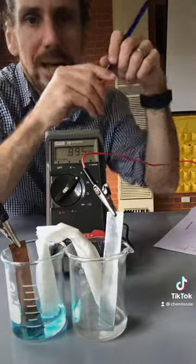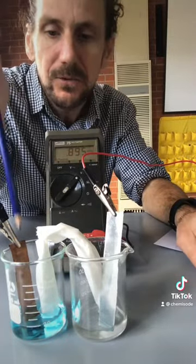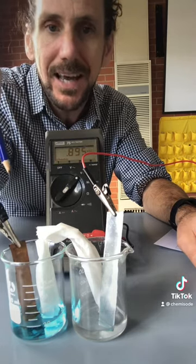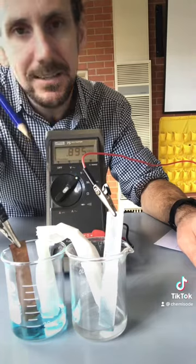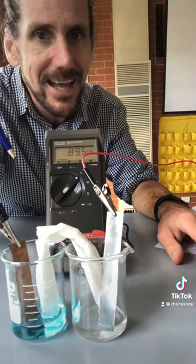With galvanic cells we have particular names that we give things. This copper is where the reduction reaction's occurring and electrons are being gained. So that makes that the cathode. Over here at our zinc that's where oxidation is occurring and electrons are being lost. That makes that the anode.